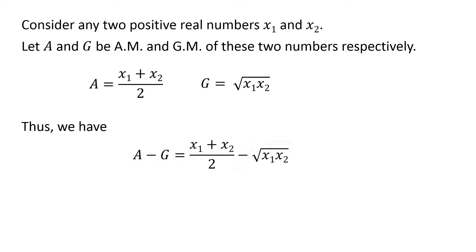Thus, we have A minus G equals x1 plus x2 upon 2 minus square root of x1 times x2. We can write it as A minus G equals x1 plus x2 minus 2 times square root of x1 times x2, upon 2.